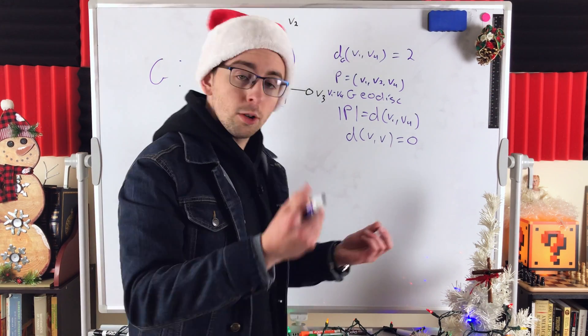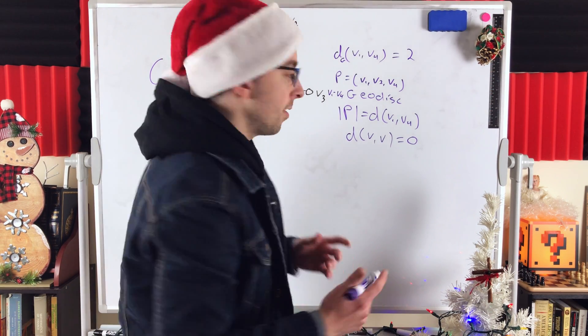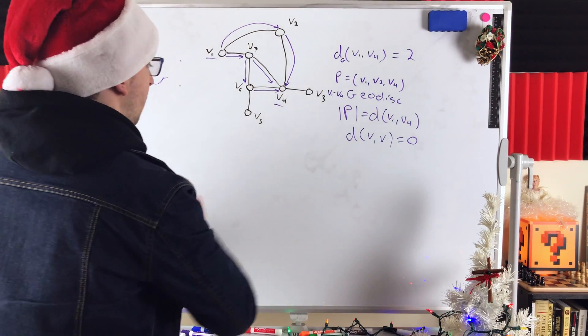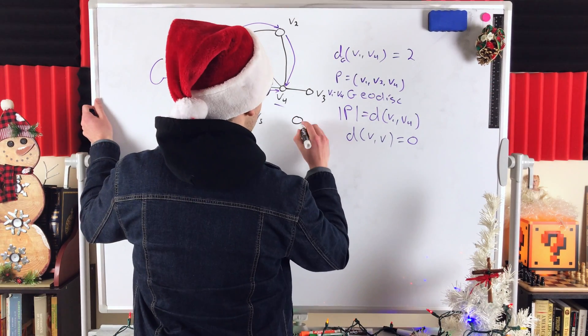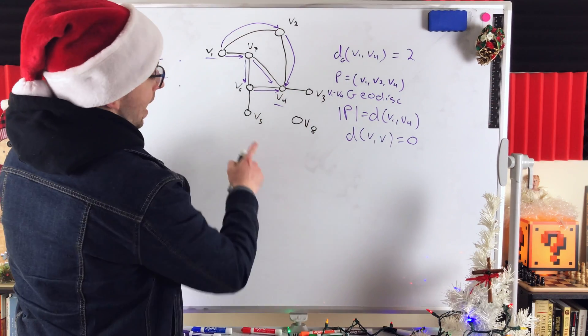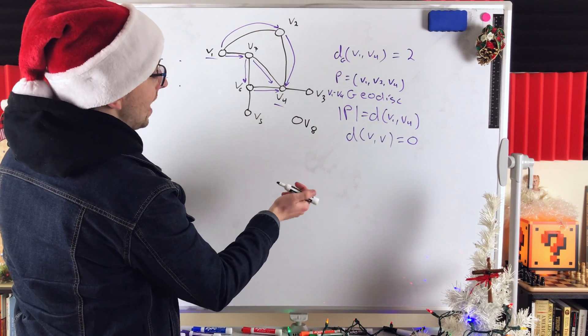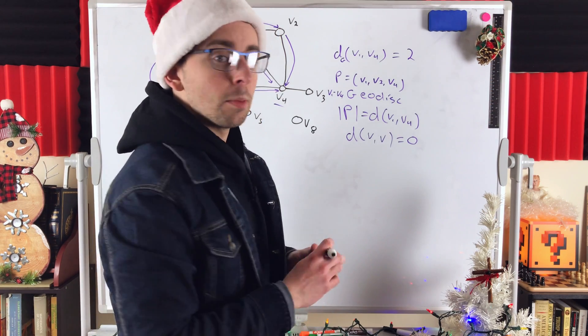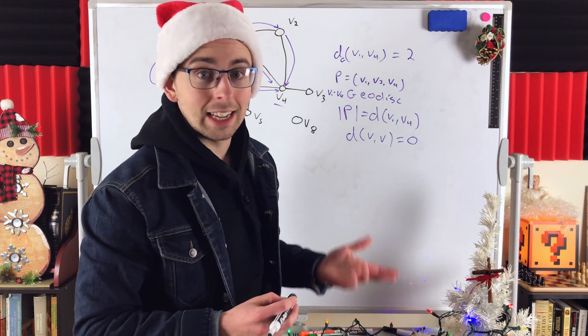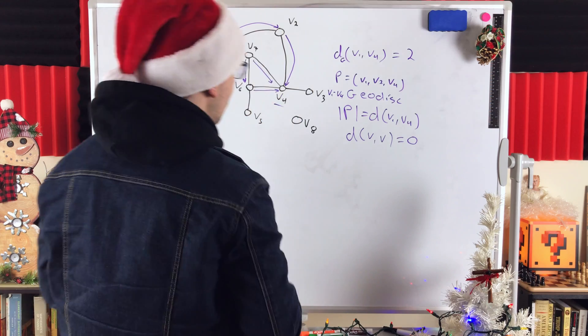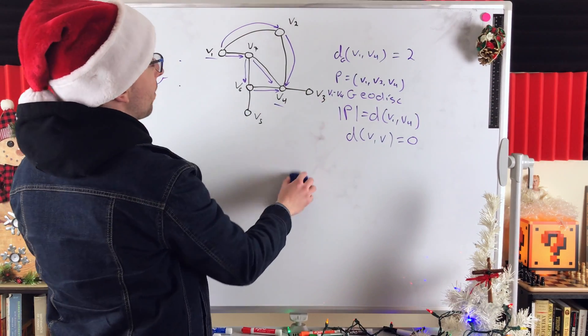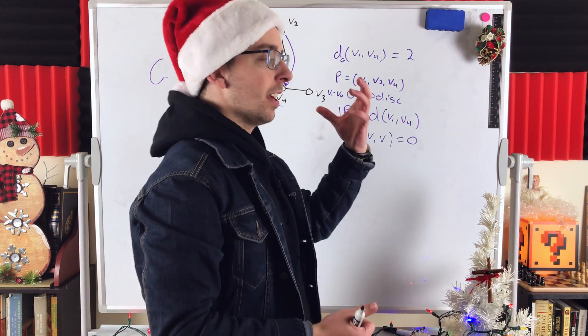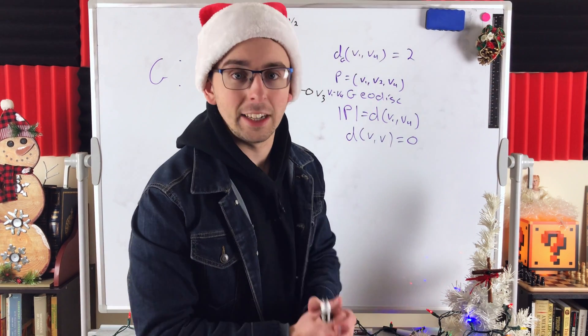Also, if we take two vertices that aren't connected, say we add another vertex to this graph. Say we put a vertex V8 right over here. There is no path connecting V5 to V8. So, the distance from V5 to V8 is undefined. The distance between two vertices is only defined if there is a path connecting them. In this case, getting rid of V8, we have a connected graph. So, there will be a distance between any two vertices because there exists a path connecting any two vertices.